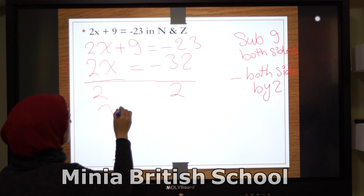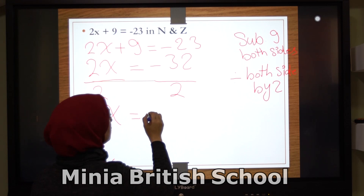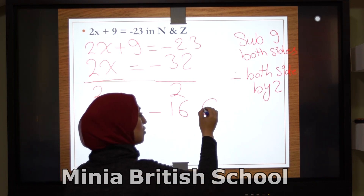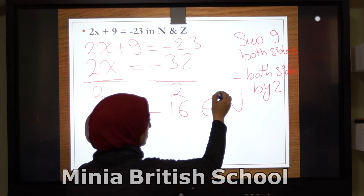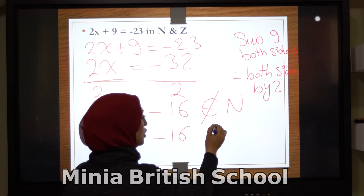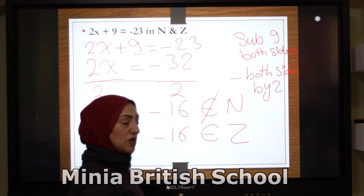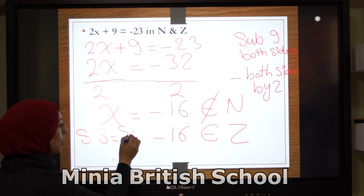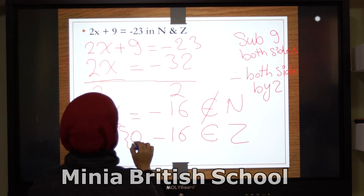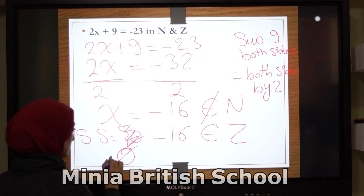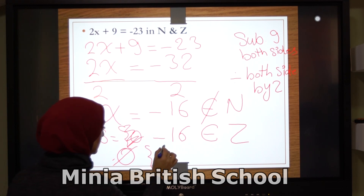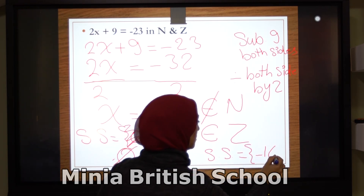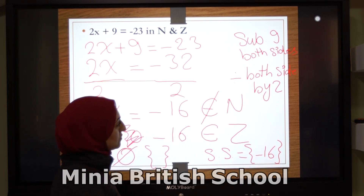I divide both sides by 2. So it will be x equals negative 32 over 2, which is negative 16. Does negative 16 belong to ℕ? No, it doesn't belong to ℕ. Does negative 16 belong to ℤ? Yes, it belongs to ℤ. So the solution set in ℕ is the empty set, and the solution set in ℤ equals {negative 16}.